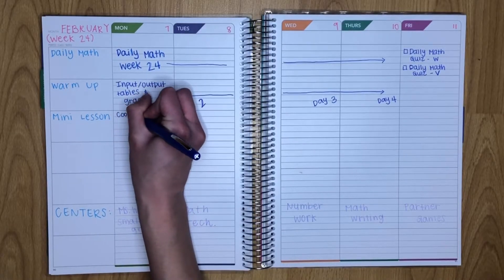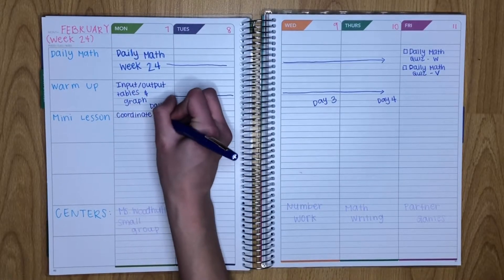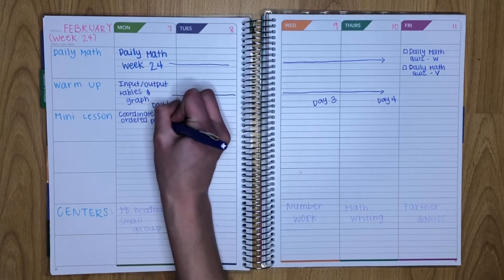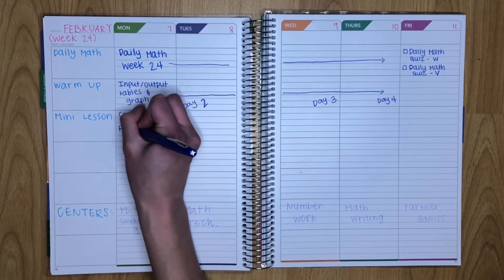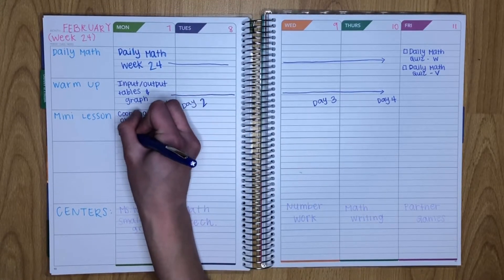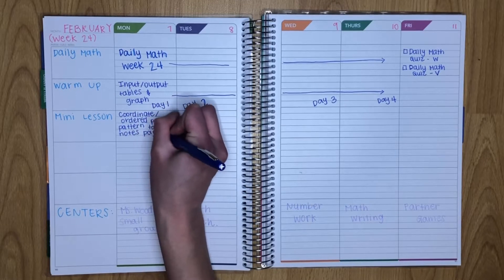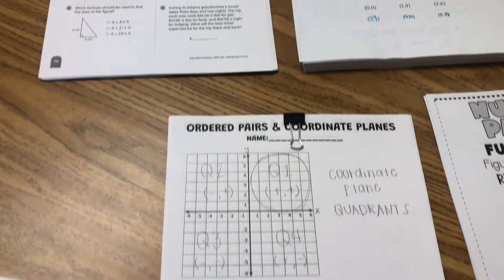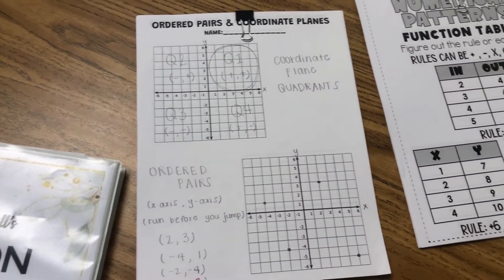After warm-up, we go into our mini-lesson portion of math. Sometimes I do mini-lesson before warm-ups on Mondays because it's usually introducing the new knowledge for the week. So this week, we are learning coordinate planes, ordered pairs, patterns, and input-output tables. So I like to do a notes page or anchor chart with the students to introduce the content.